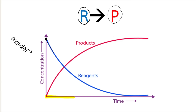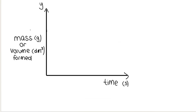What happens to the products? Products, represented by the pink-red curve, start at zero. As time goes on, the amount of products produced increases — the concentration of products increases. If we have mass or volume formed on the y-axis, this would be the mass or volume of the product versus time. At the beginning of the reaction, there are no products, so we start down here.